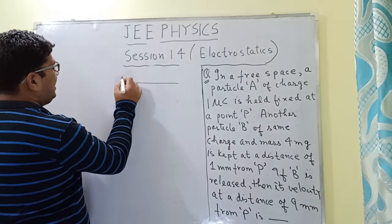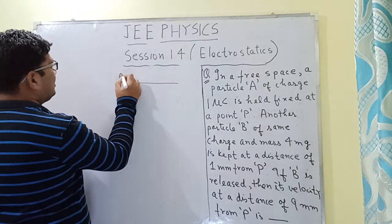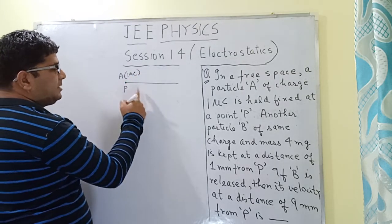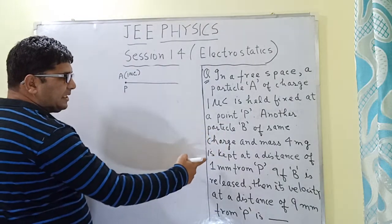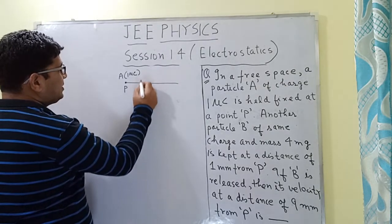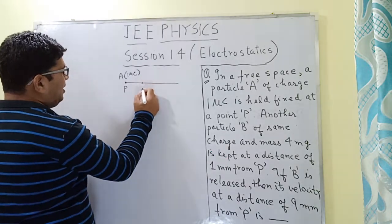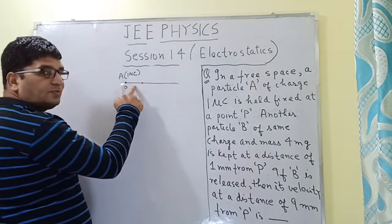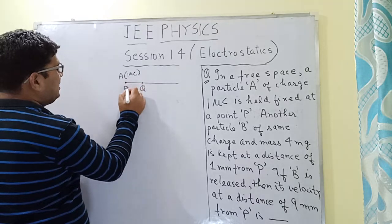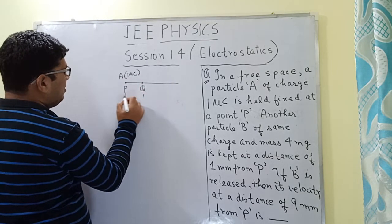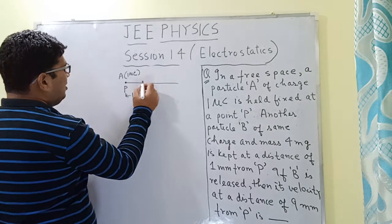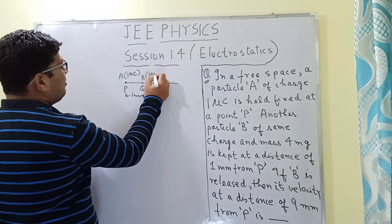So here is particle A which is 1 microcoulomb, positioned at point P. Another particle B of the same charge and mass 4 mg is kept at a distance of 1 mm from P. Particle B is 1 microcoulomb and is positioned at point Q. So this distance PQ is 1 mm.